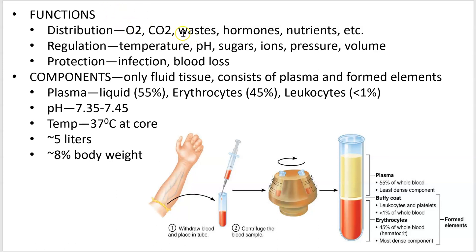The word distribution — some people think distribute wastes, which seems weird. We tend to want to think about removing wastes. Those wastes are produced by cells throughout your body, and if you're going to get rid of metabolic wastes like urea, you're going to have to transport or distribute them to your kidneys to be filtered out. Hormones travel through the blood and have to be distributed. Nutrients from the digestive system, chemical signals of other sorts — lots of things are distributed.